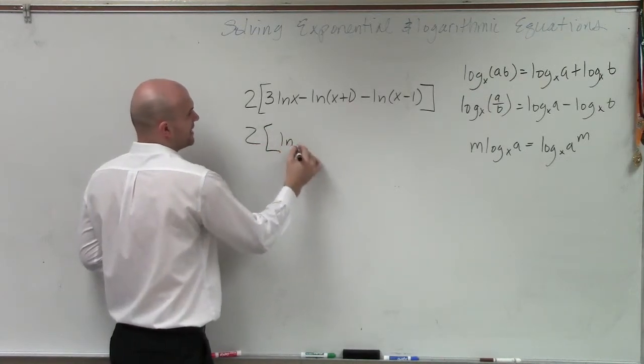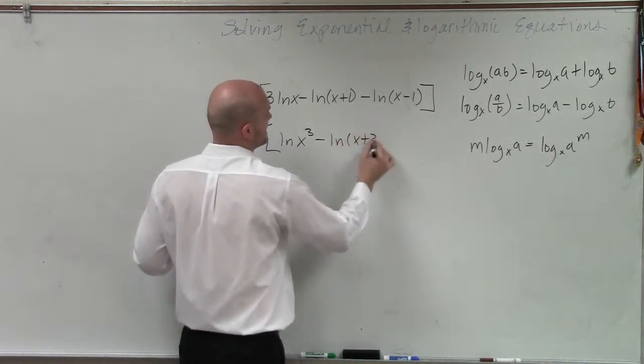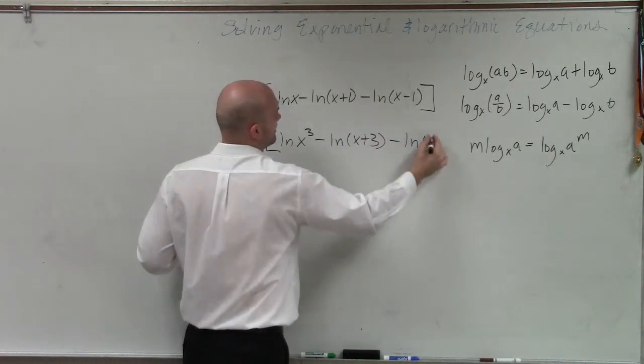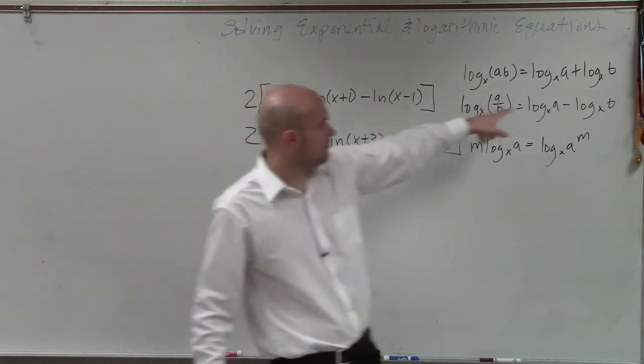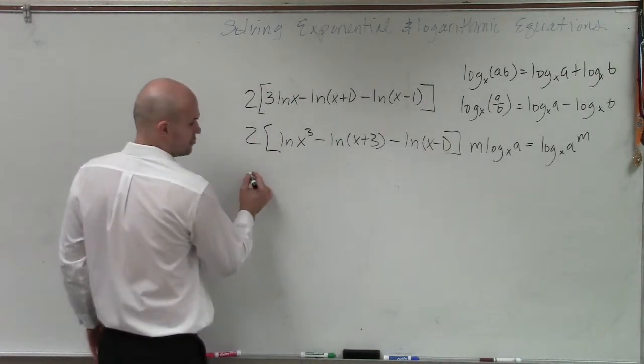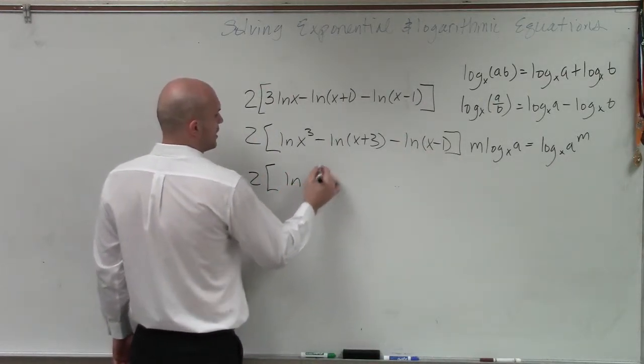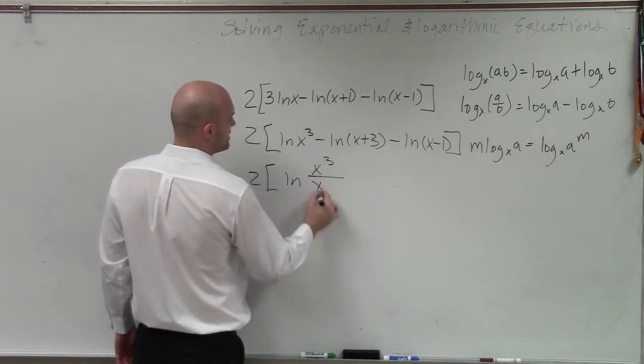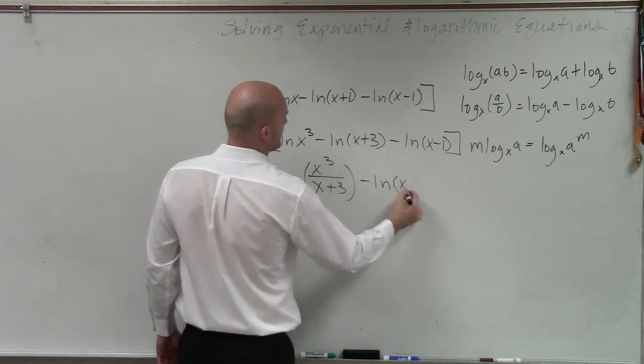2 divided by ln of x cubed minus ln of x plus 3 minus ln of x minus 1. All right, now we have a division. We know that when we have subtraction, we can rewrite that as the division. So I have 2 times ln of x cubed divided by x plus 3 minus ln of x minus 1.